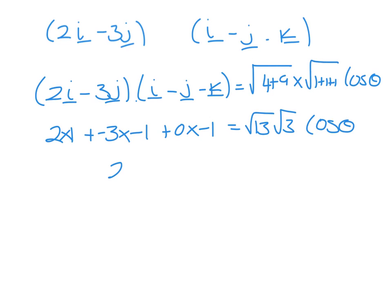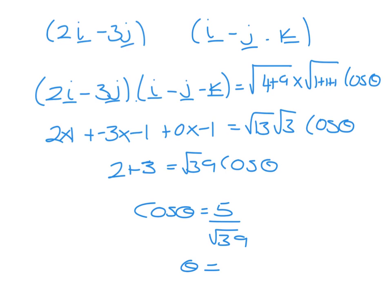So we have 2 plus 3, equals root 39, cos theta. Cos theta equals 5 over root 39, so theta equals 36.8 degrees, and that's to 3 significant figures.